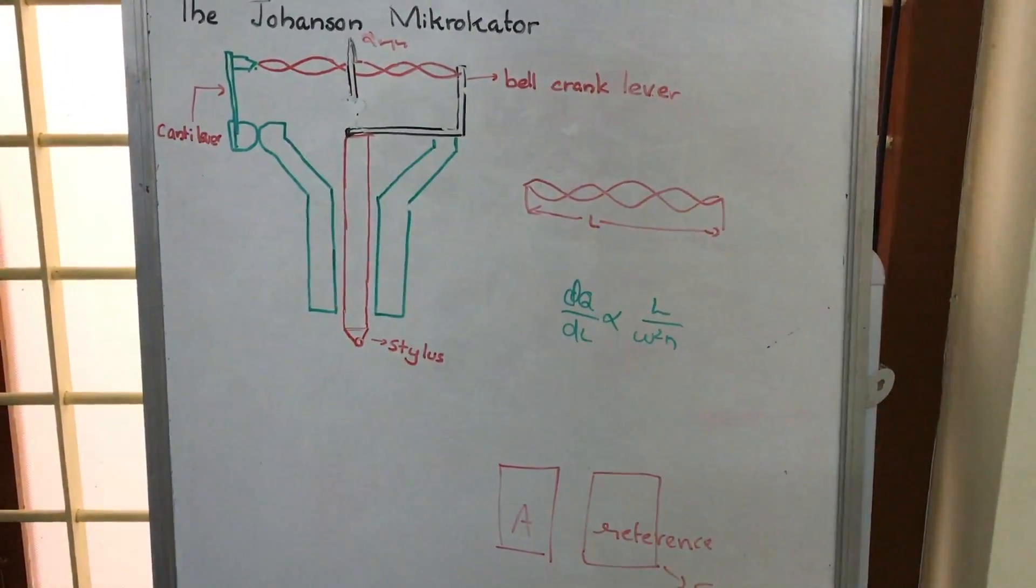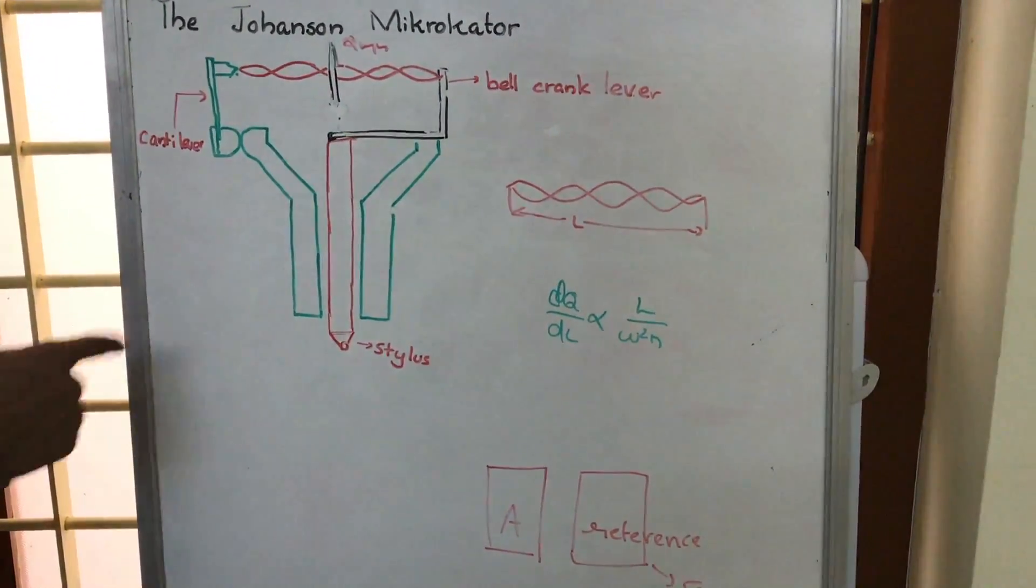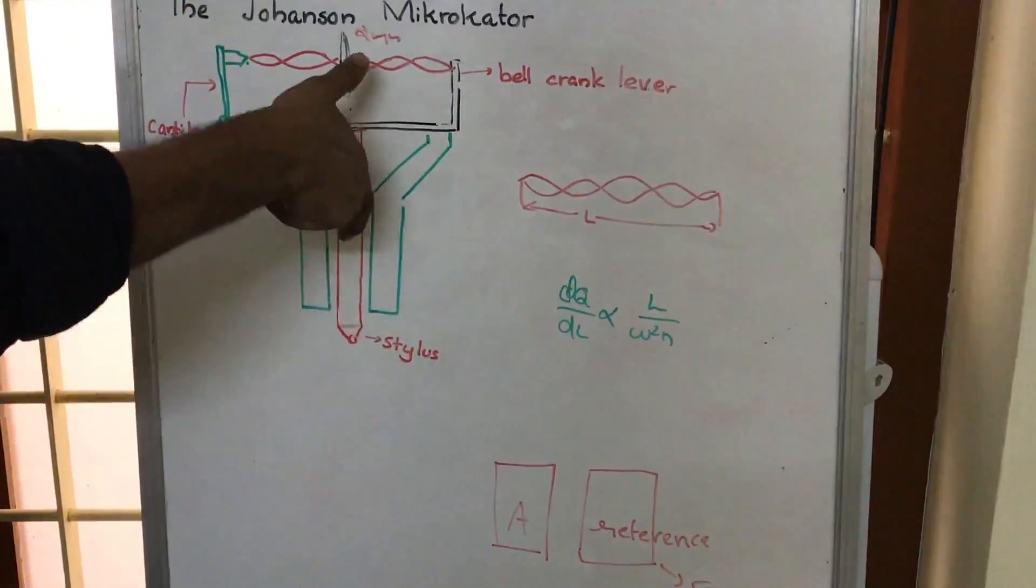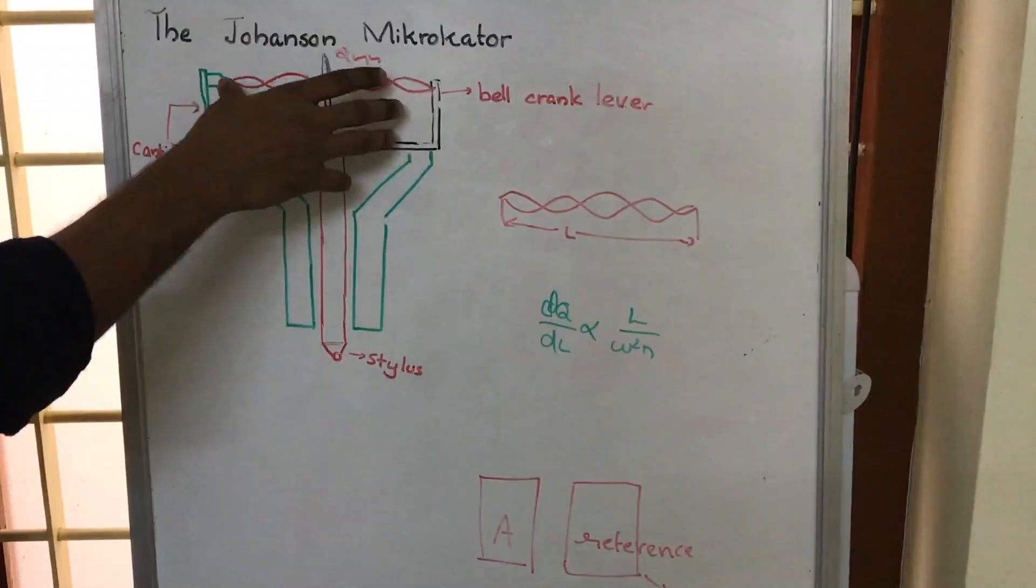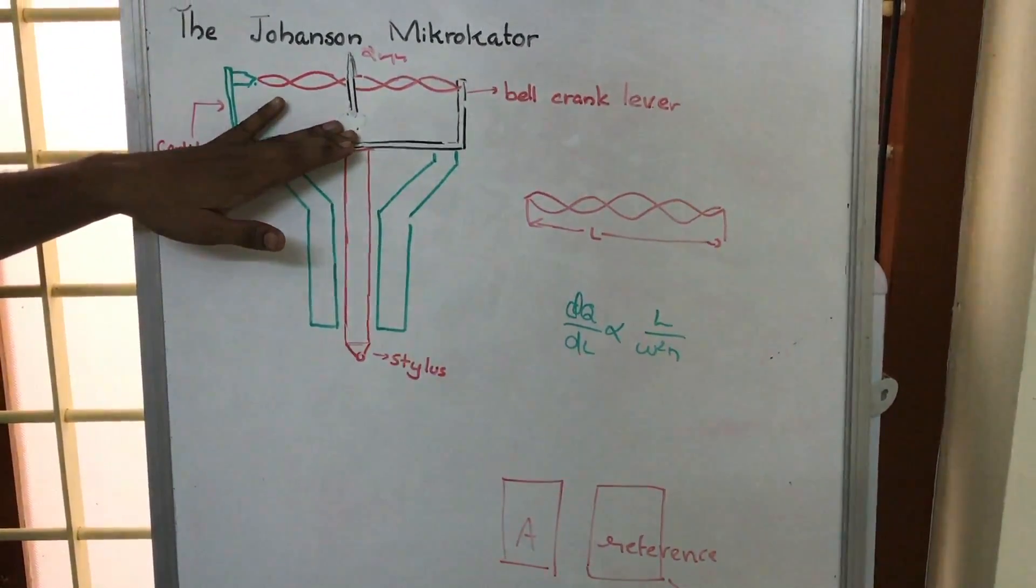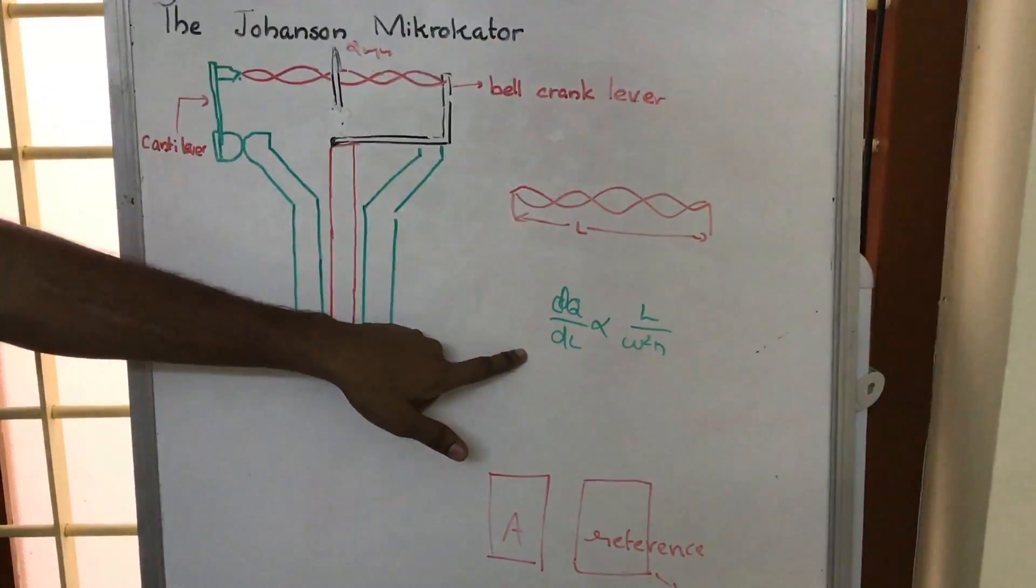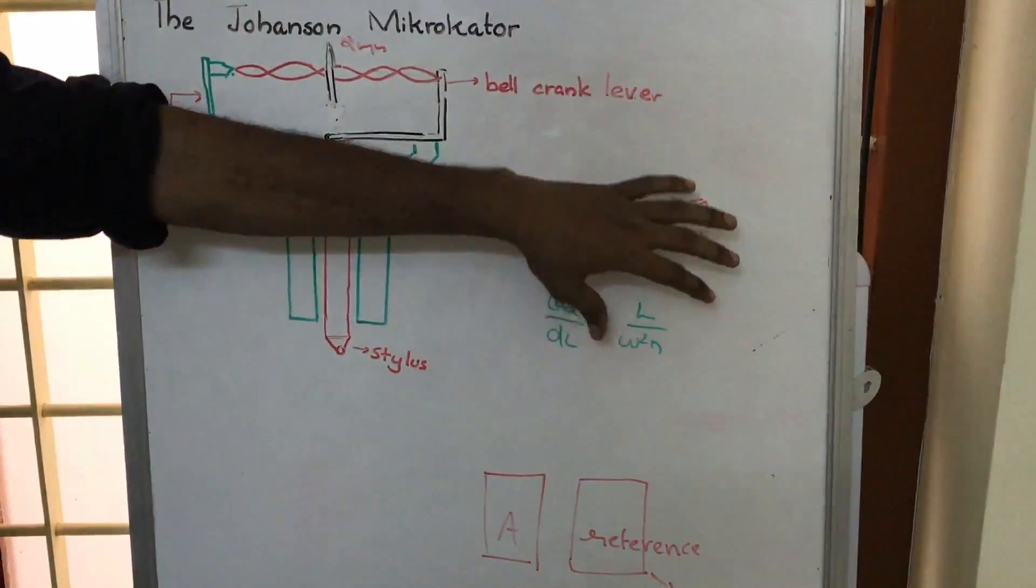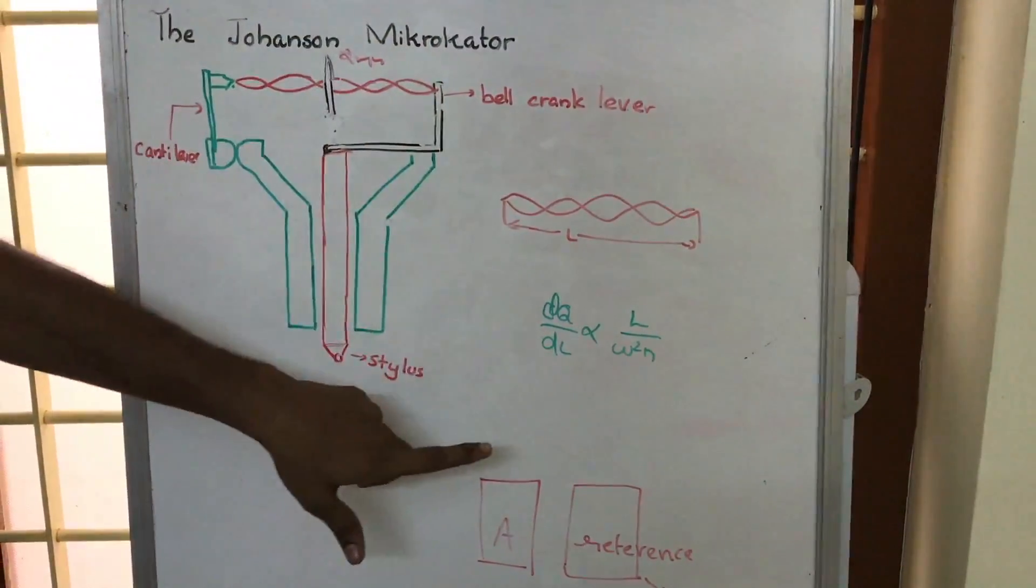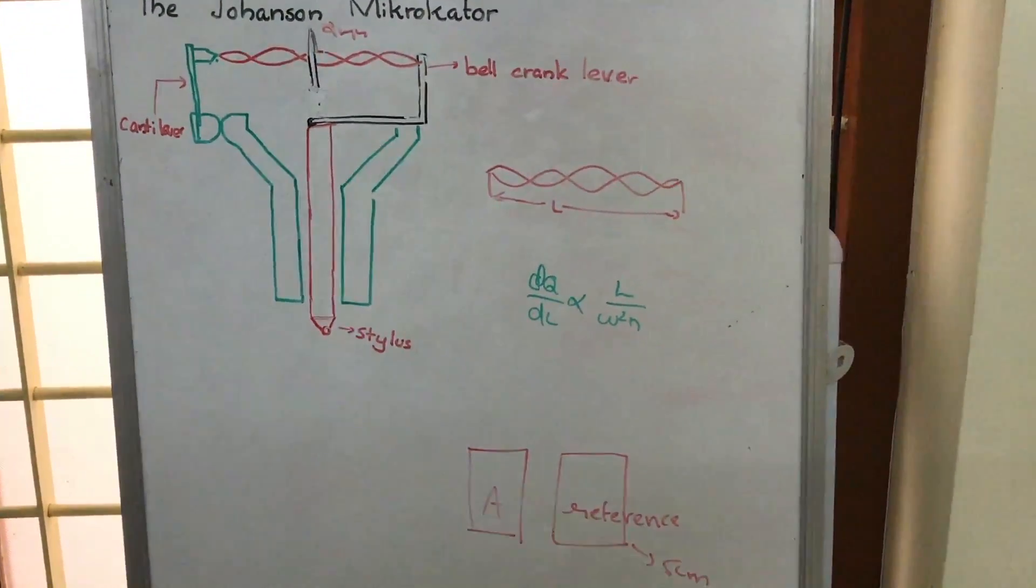Here, the thing to note is that we have a cantilever, a bell crank lever, a stylus, and a strip. Now, this movement of the strip, dθ/dl, where l is the length of the strip, is proportional to l/w²n.